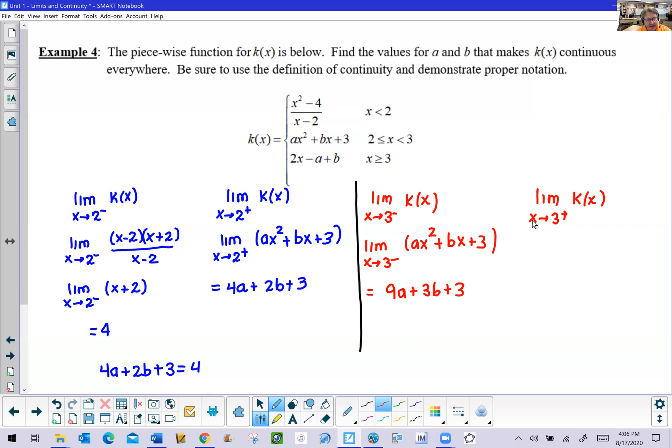Let's do the same thing as x approaches 3 from the right. In this case we're finally going to get a chance to use our bottom piece, the 2x minus a plus b. And once again we have a green light limit on our hands because we just have a polynomial. So if we insert 3 for x, we end up with 6 minus a plus b. And I'll ask again, what is it that we have to know about those two limits? Well they have to be equivalent to each other. That is the only way that this function k has any chance of being continuous.